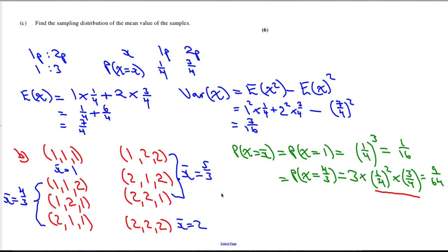Let's also do the probability that we get 5 over 3, that the average number of pennies is 5 over 3. Again, there's three different ways that it can happen. We need to get two 2s and one 1. One 1 is a quarter, and two 2s is 3 quarters squared. So 3 times 1 quarter times 3 quarters squared. When we work that out, we get 27 over 64.